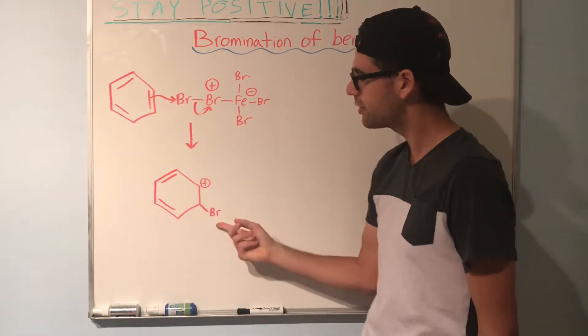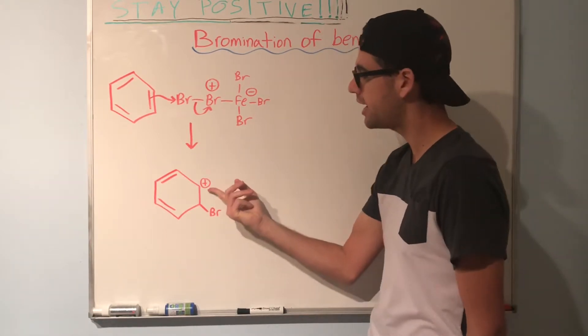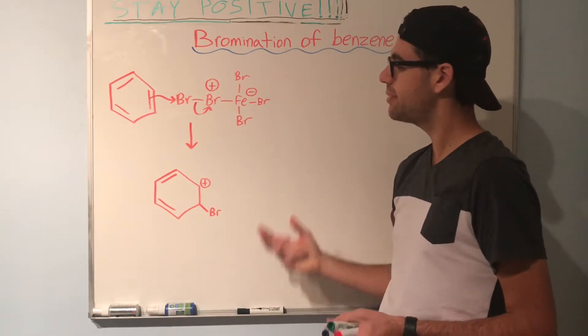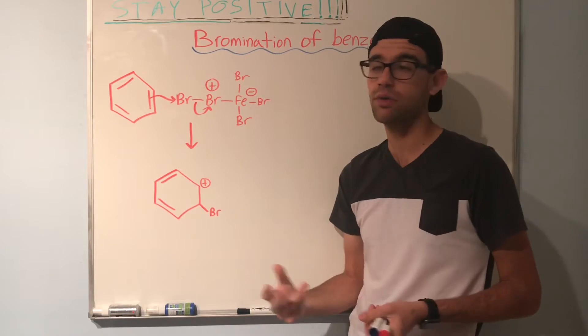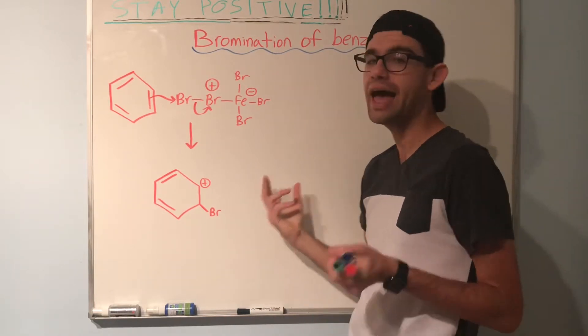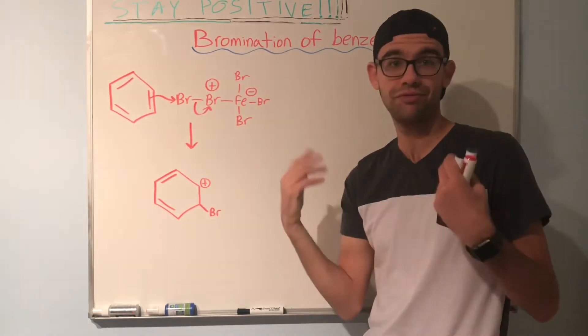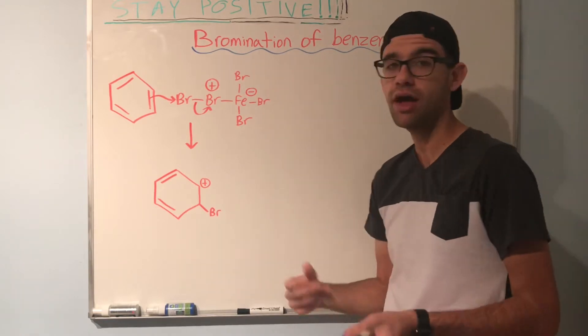Now we're here. Notice that we've added the Br onto the ring, but we've also formed a carbocation because we disturbed the aromaticity of benzene. The next step has to be regenerating that pi bond and restoring the aromaticity. That'll be done via acid-base chemistry. Remember that now we have the rest of our former electrophile hanging around in solution.